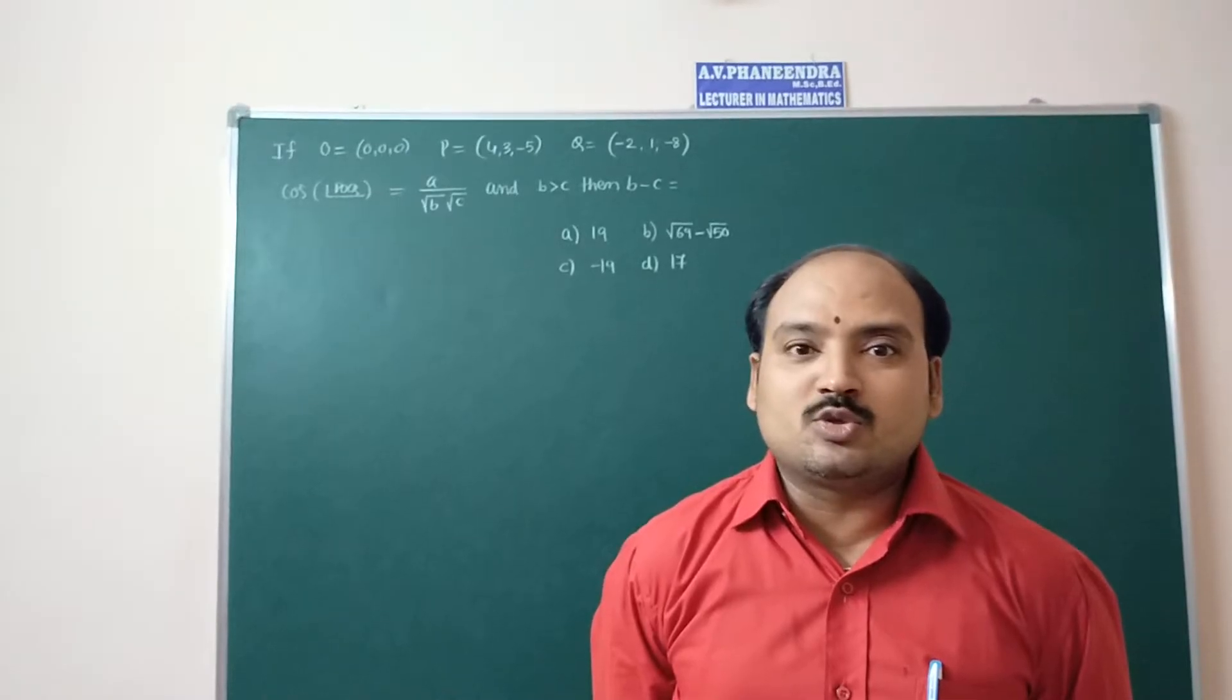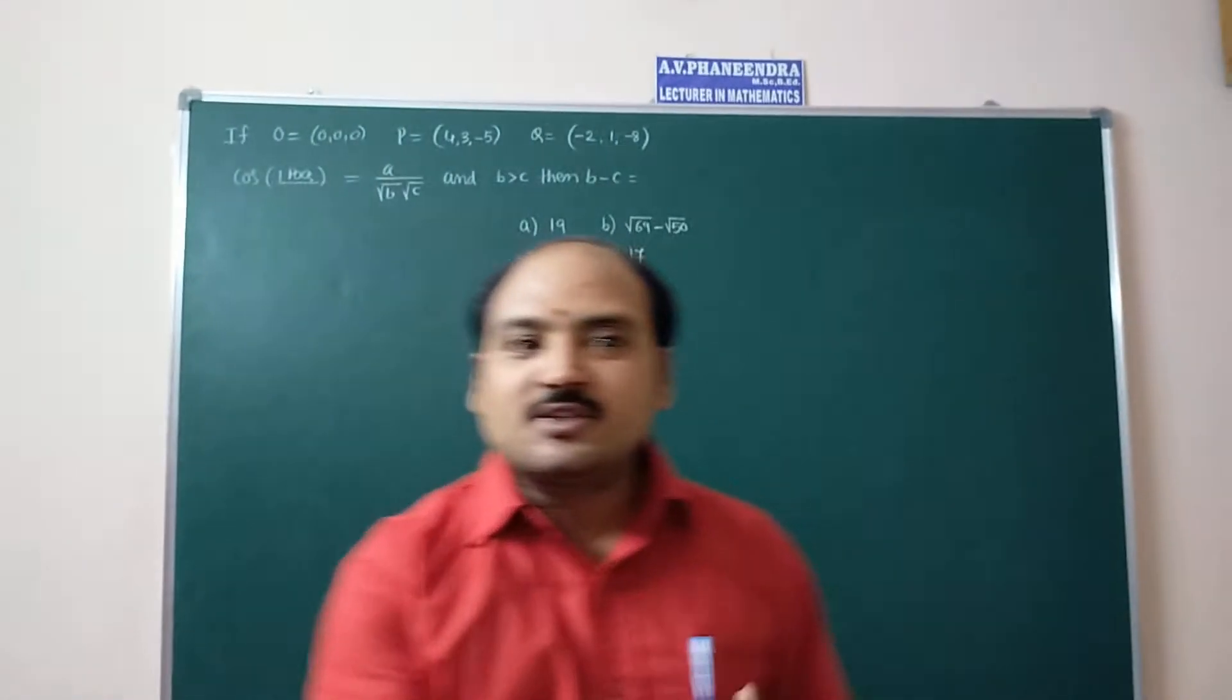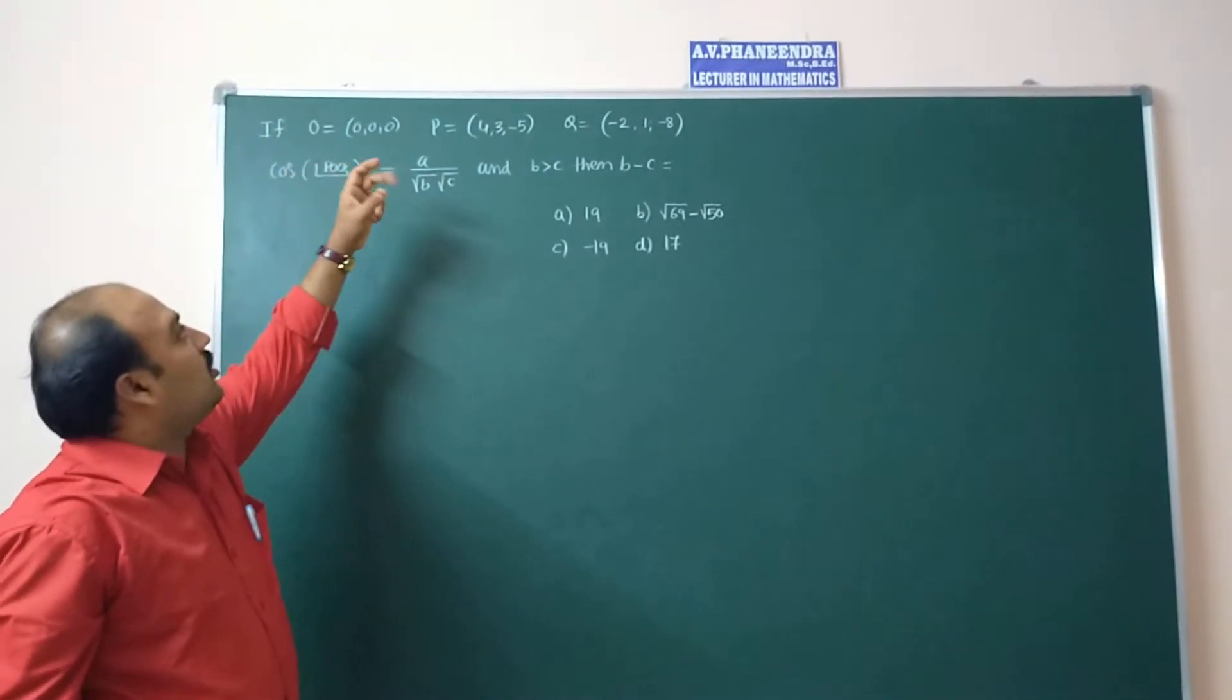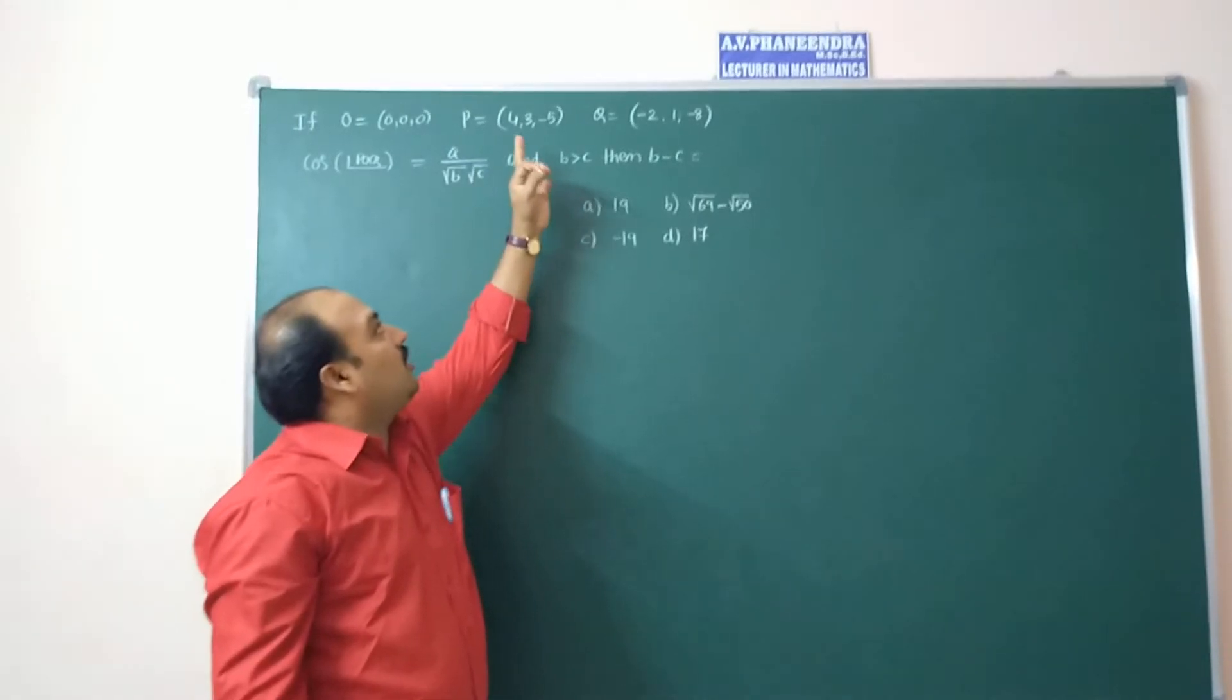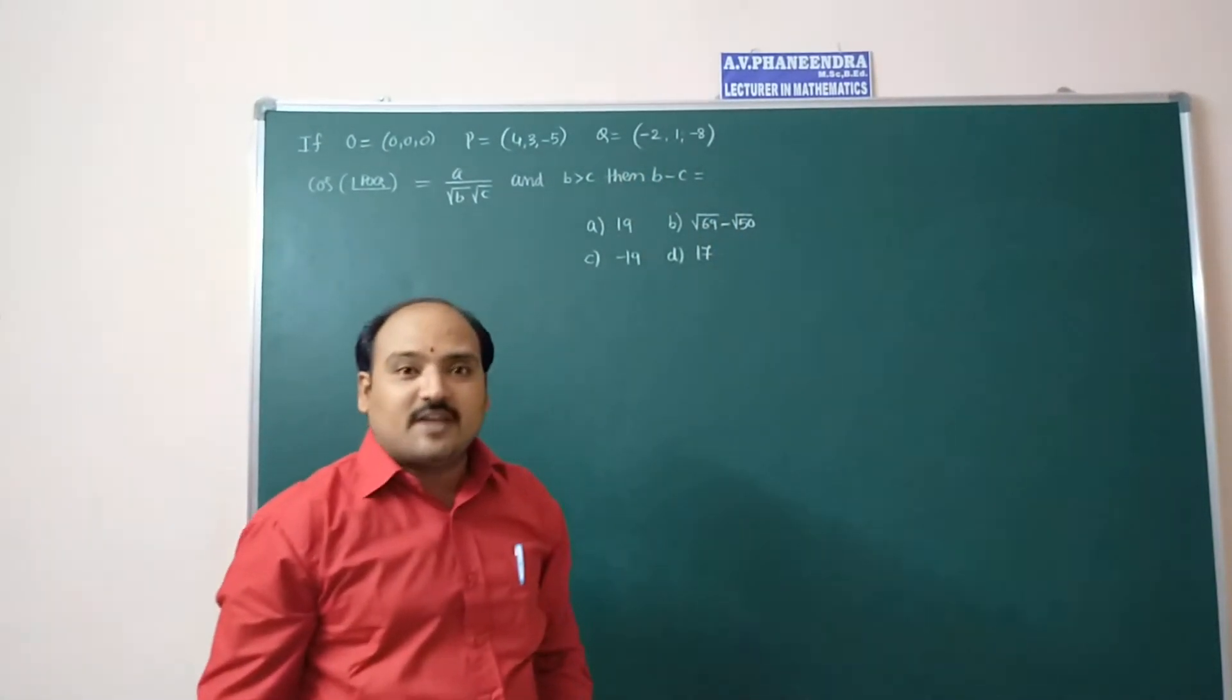This formula application question we are going to discuss now. See that if O is 0, 0, 0 and P is 4, 3, minus 5, and Q is minus 2, 1, minus 8.